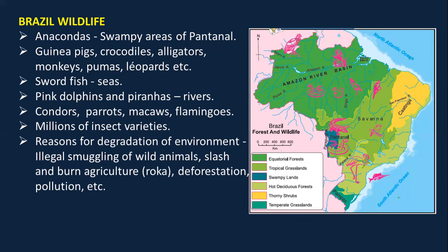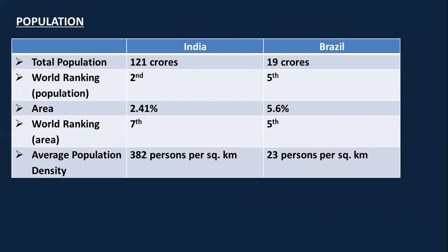Because Brazil has a very dense forest, there is a lot of insect variety. The reasons for degradation of environment in Brazil are illegal smuggling of wild animals — because the dense forest has a huge variety of wildlife — slash-and-burn agriculture (also called Roca) practiced by tribal people, deforestation on a large scale, and pollution. These reasons apply to extinction and degradation of natural vegetation and wildlife in both India and Brazil.